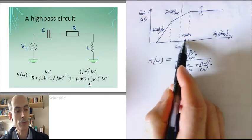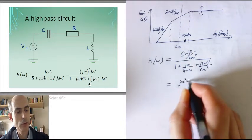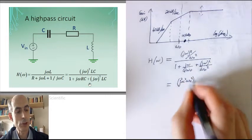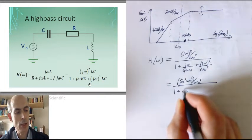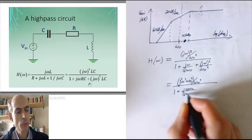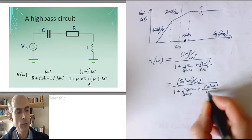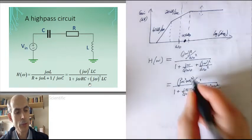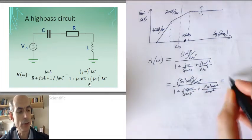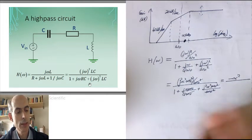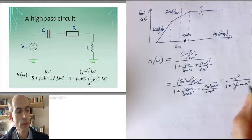The gain at that frequency would be given by jα²ω₀² — j² rather — over ω₀², all over 1 plus jα ω₀ over qω₀ plus jα²ω₀² over ω₀², and all of the ω₀² cancel out. That just leaves us with minus α² on the top, and 1 plus jα over q minus α² on the bottom.